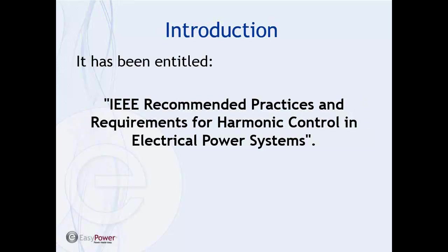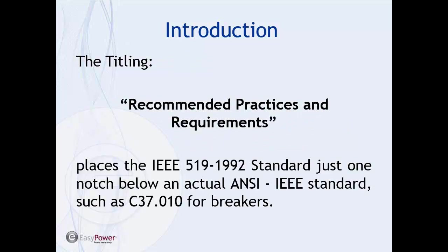It's been entitled IEEE Recommended Practices and Requirements for Harmonic Control in Electrical Power Systems. The titling 'Recommended Practices and Requirements' places the 519 standard just one notch below an actual ANSI IEEE standard, such as C37.010 for breakers. It doesn't quite carry the full weight of an ANSI IEEE standard, but because it's a recommended practice, we really need to pay attention to it and make sure distortion levels throughout the electrical power system are within acceptable levels.